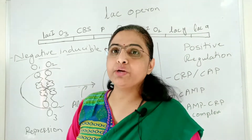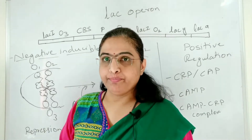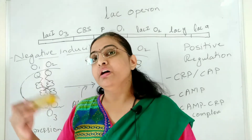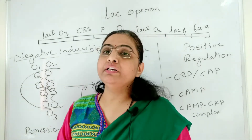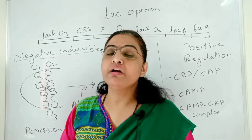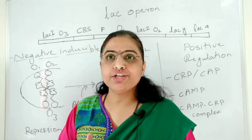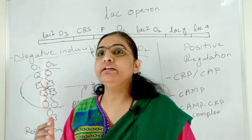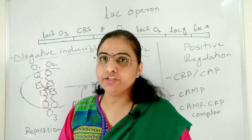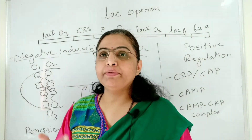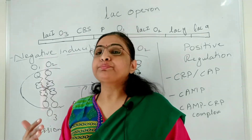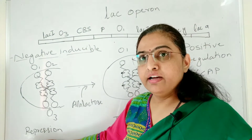Now going towards the first type of regulation, and that is the negative inducible. We have learned about the types of regulations previously, and in that negative inducible there are two stages. The first stage is repression and the second stage is induction. So as the lac operon is regulated by the negative inducible type of regulation, here also there will be the presence of two stages: first is repression and the second one is induction. So the first stage is repression.